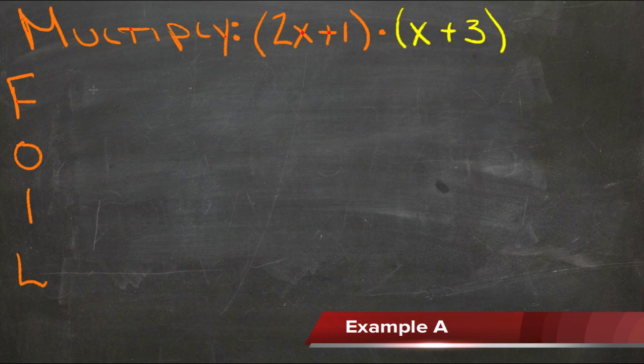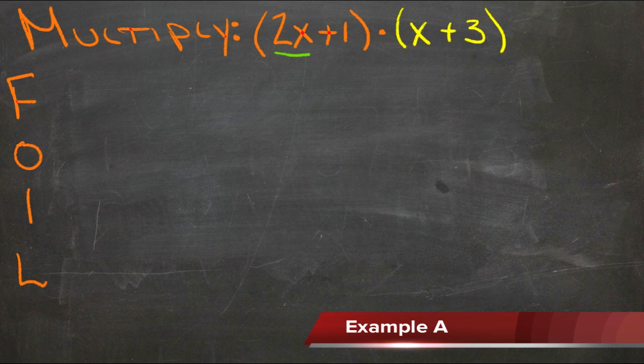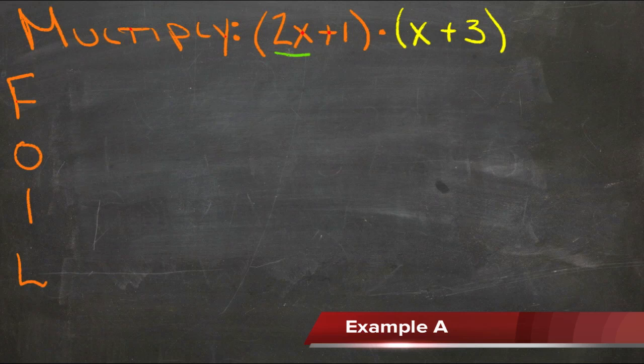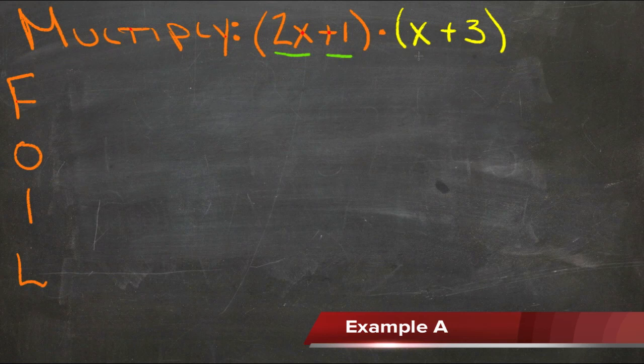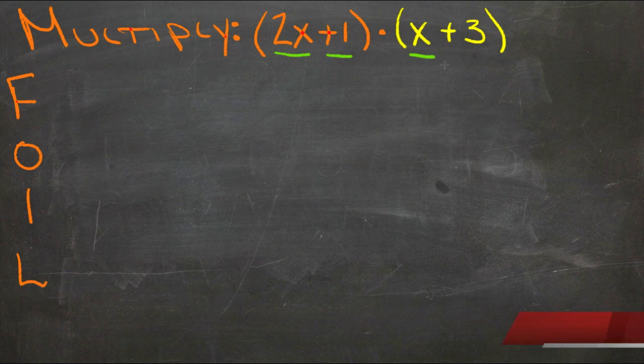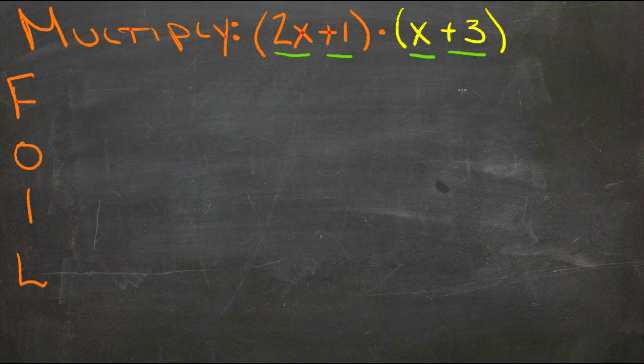The only real trick to multiplying a polynomial by another polynomial is to not get lost about which terms you've already multiplied and which you haven't multiplied yet. You have to take each of the terms in the first set and multiply it by each of the terms in the second set. So here we have to take 2x and positive 1 and multiply them each by x and positive 3. And there's a couple of different ways to keep them straight.